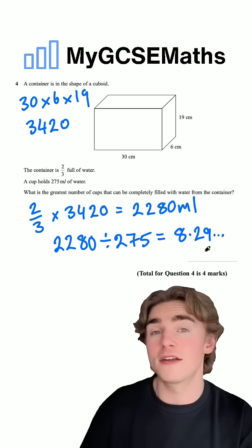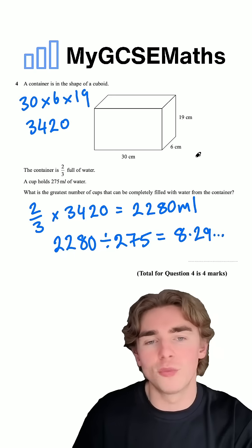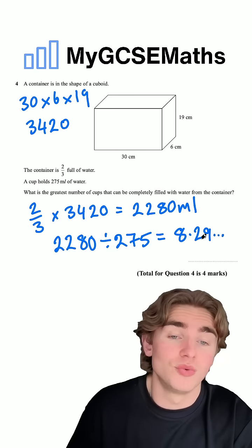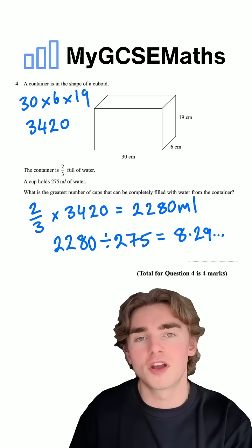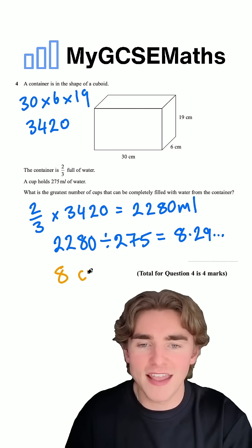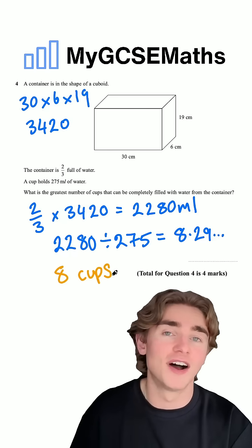So what's the total amount of cups that we can completely fill? Well, the total that we can completely fill, we can't have 0.29 of a cup. So the total number of cups that we can completely fill is going to be eight cups. And that is going to give us our answer.